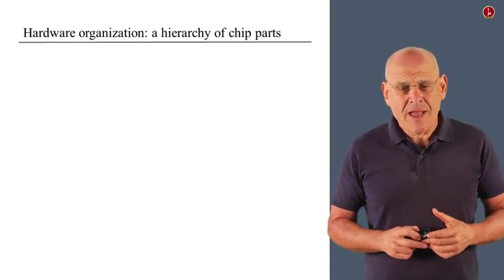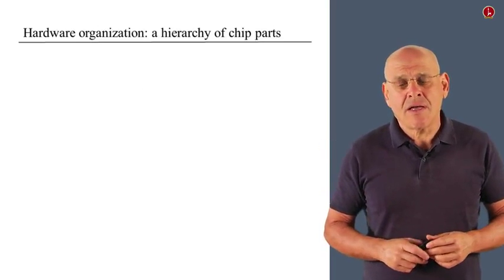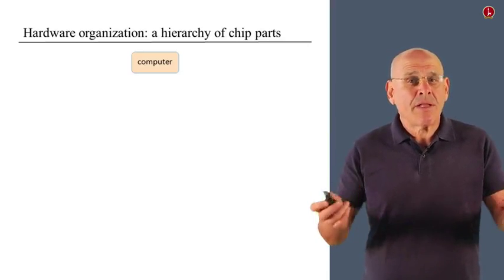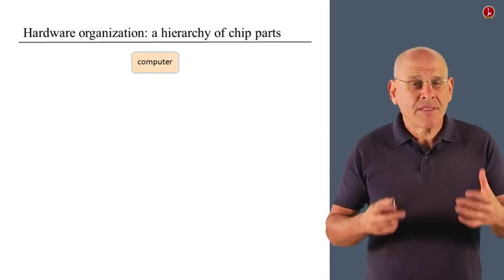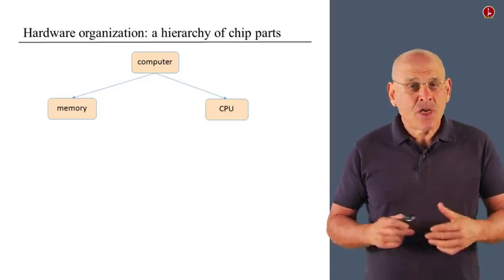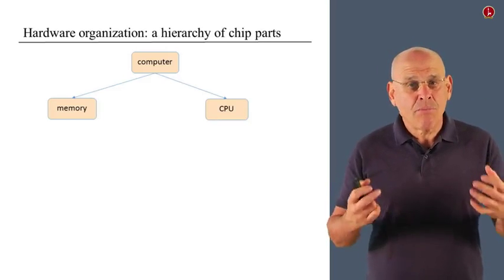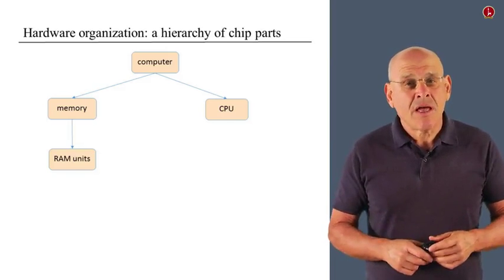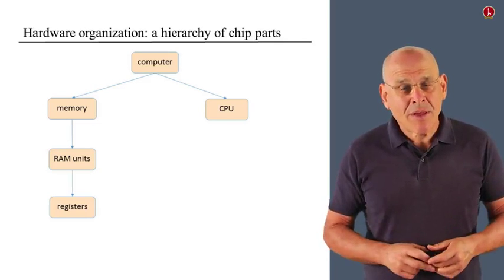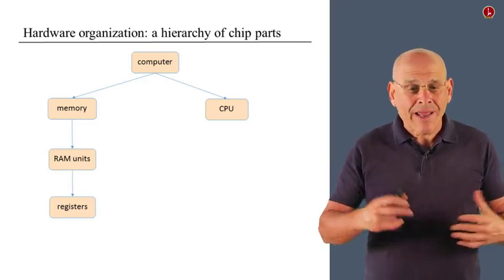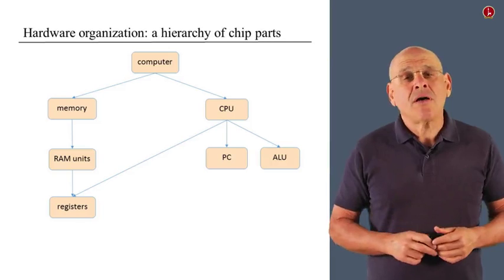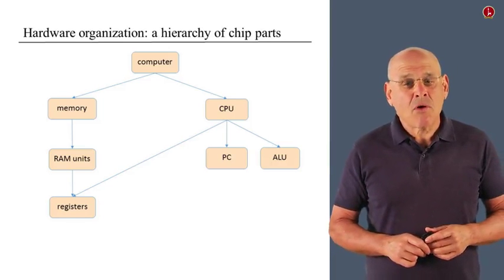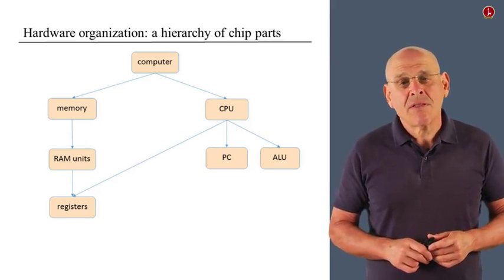Before we get started, I want to begin with some overall broad overview of what we have done so far or what we are doing in the course in general. We're building a computer and the computer is implemented as a very high level chip and this chip makes use of two main components, a CPU and a memory unit. The memory in turn consists of several RAM units which are pieced together.